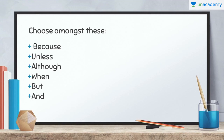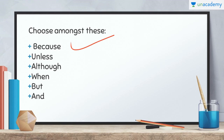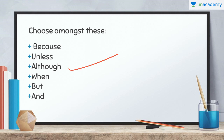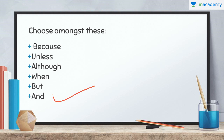Starting with today's exercise, we have 6 conjunctions for you. 'Because' — whenever we are giving a reason and the reason is in the second part of the sentence. 'Unless' — when we are giving some condition. 'Although' — when we are talking about something that was supposed to happen but something else happened. 'When' — that is related to time. 'But' — when two things are acting in opposition. And then we have 'And', which simply joins two statements.